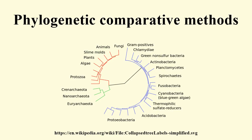Initially, these methods were primarily developed to control for phylogenetic history when testing for adaptation. However, in recent years the use of the term has broadened to include any use of phylogenies in statistical tests.